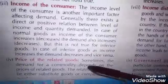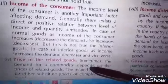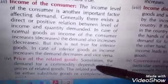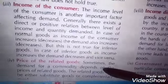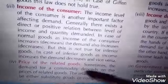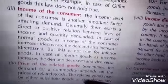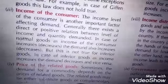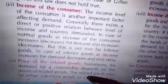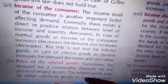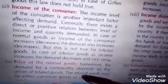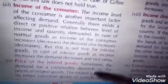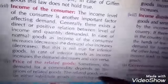Fourth comes price of related goods. Price of related goods basically refers to substitute goods and complementary goods, which we have already discussed.